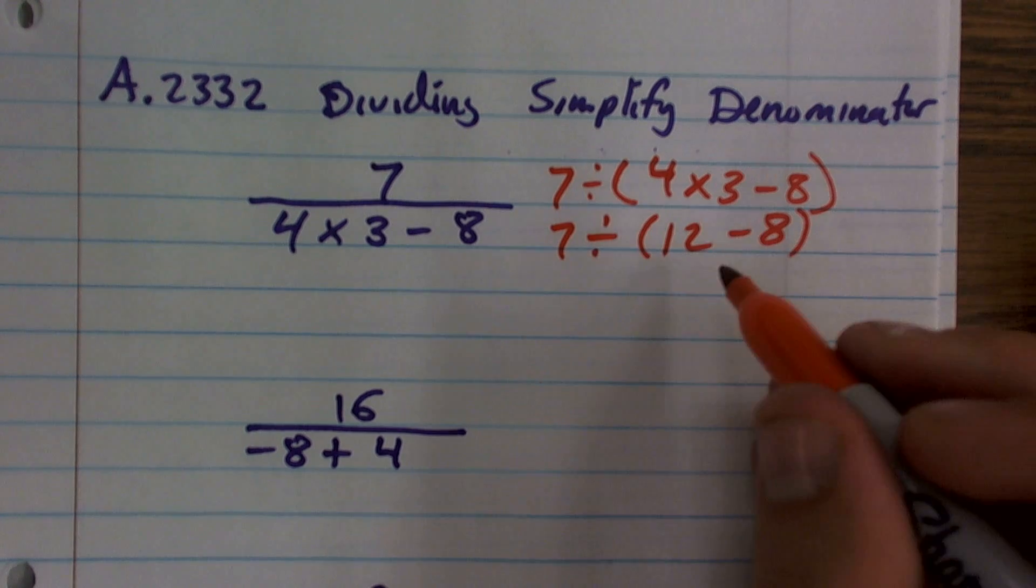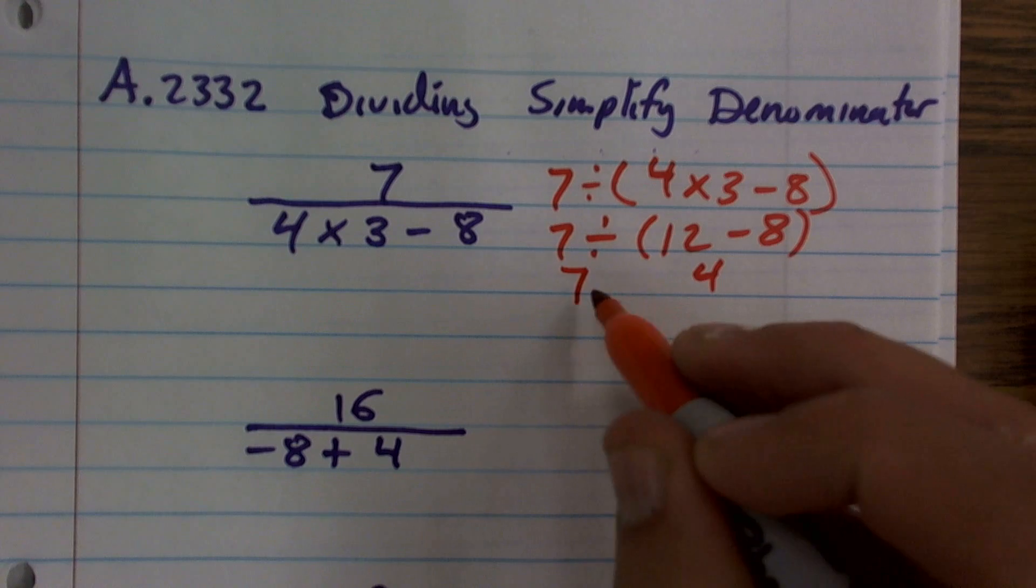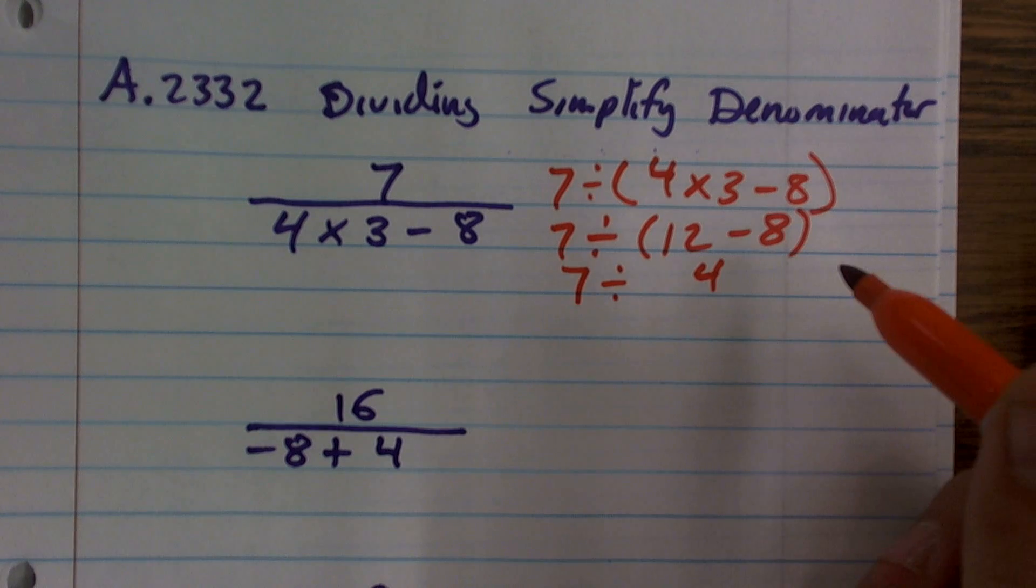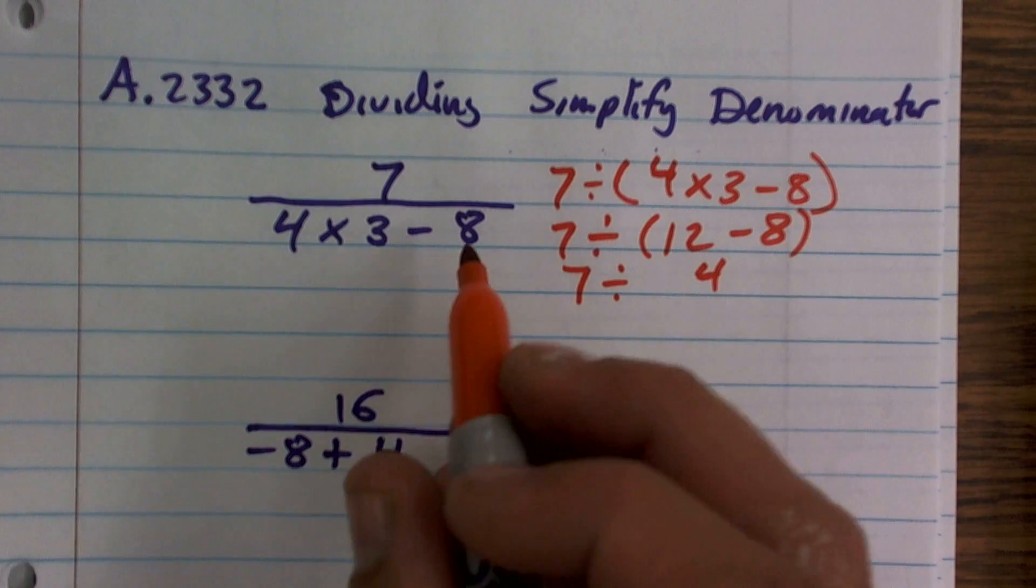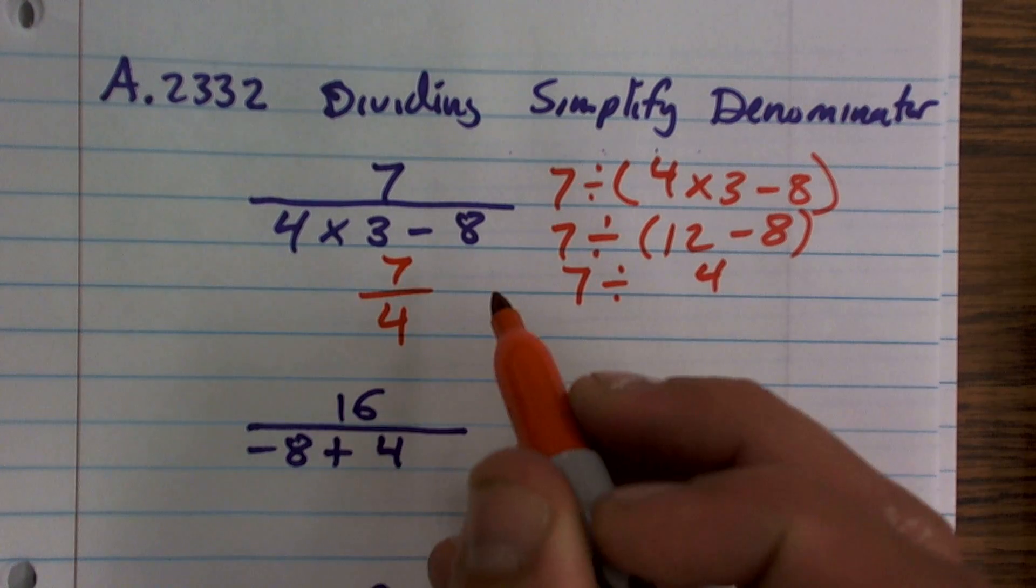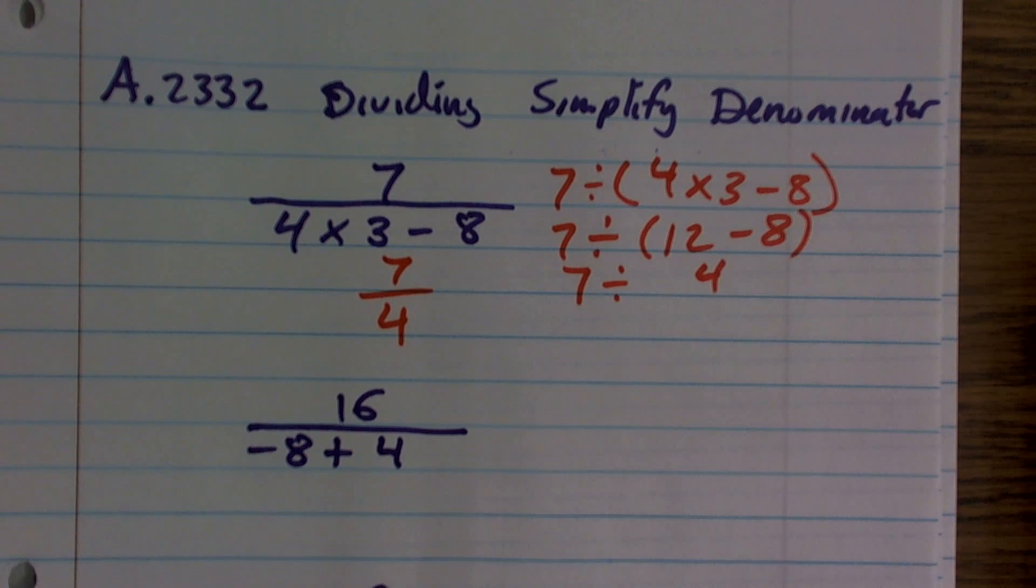12 minus 8 is going to be 4. And then I'm just left with 7 divided by 4, which is not going to be a very nice number. So I'll just leave it as 7 divided by 4 as a rational fraction number.